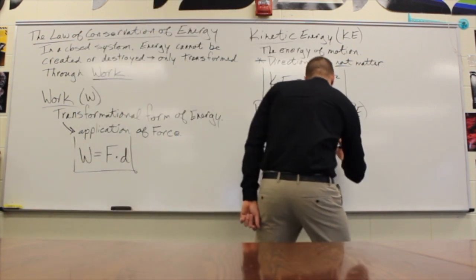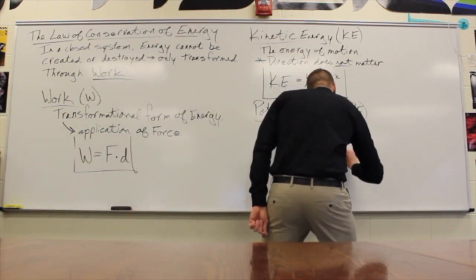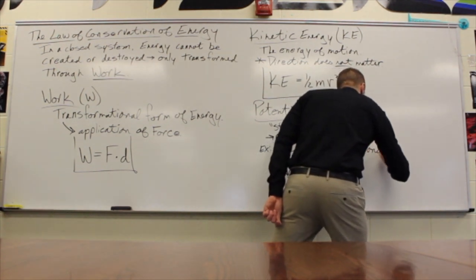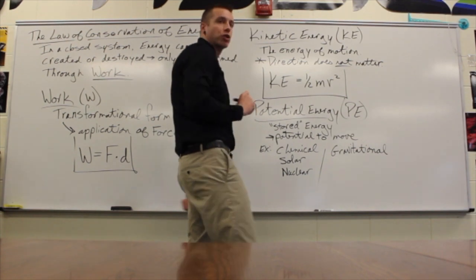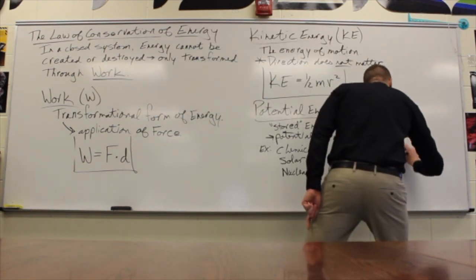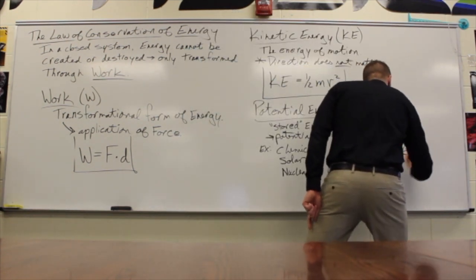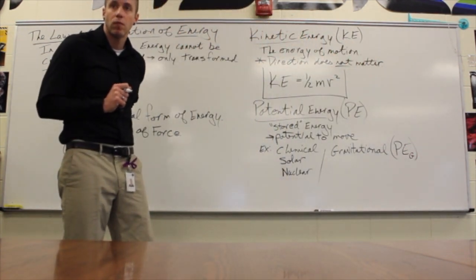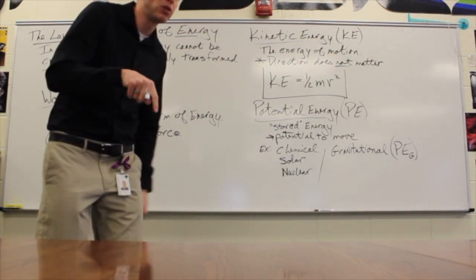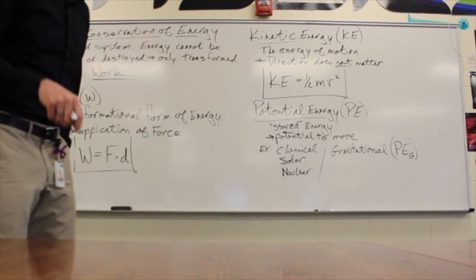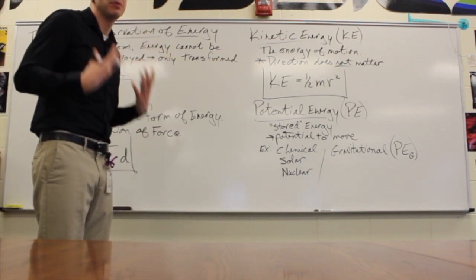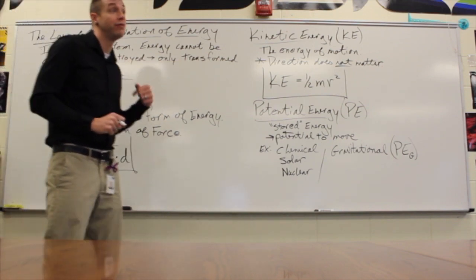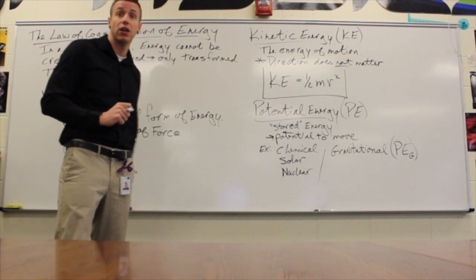The basic ones we're going to use are gravitational potential energy — symbolized PEG with G as a subscript — which is the potential to fall due to weight, very specifically the potential to move downward toward the center of the earth.